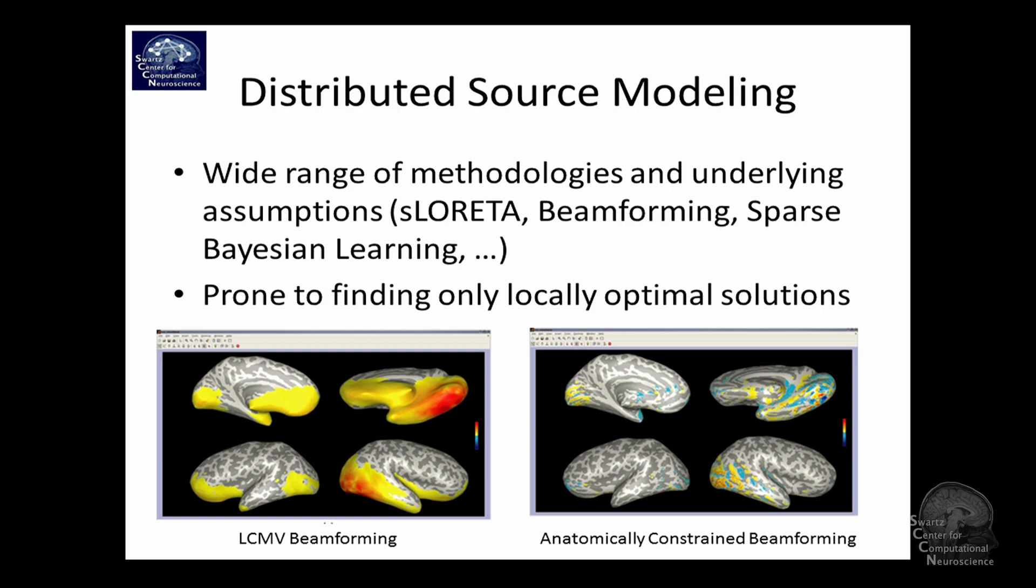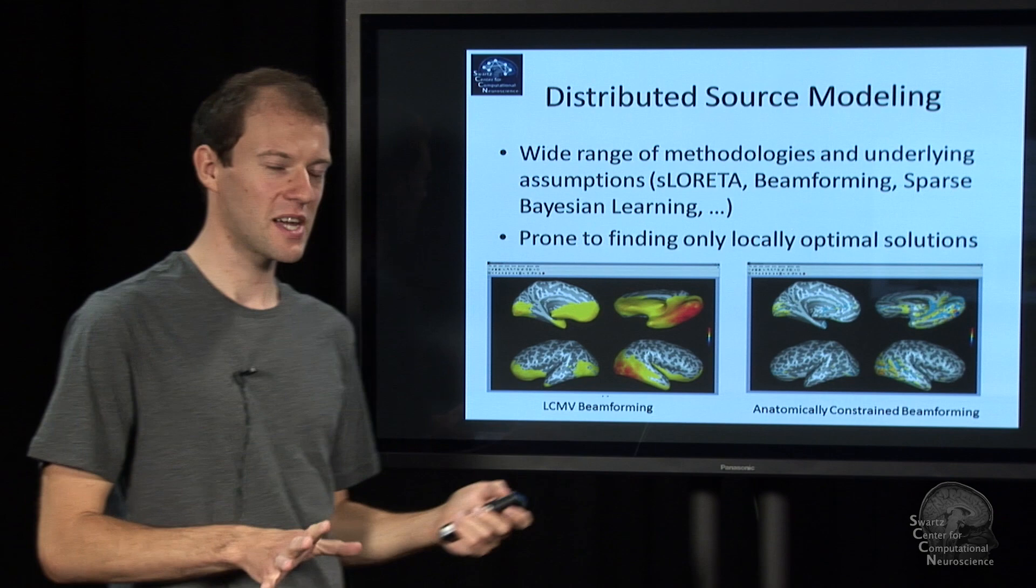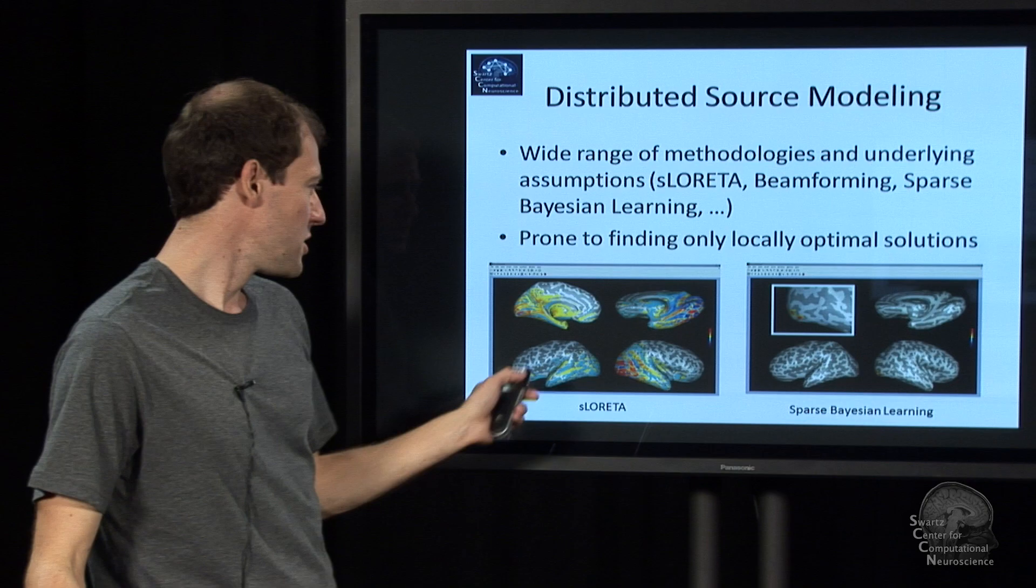Here's another one, anatomically constrained beamforming. The same data, a completely different picture, right? And so that shows you how far off they sometimes can be. But still, at least it doesn't show you some activity up here.